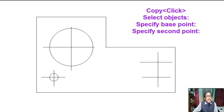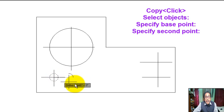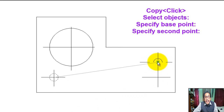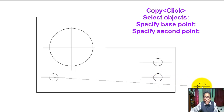Now copy the circle. Click on copy, select the object, press Enter, specify base point, specify second point of displacement, and specify second point of displacement again.